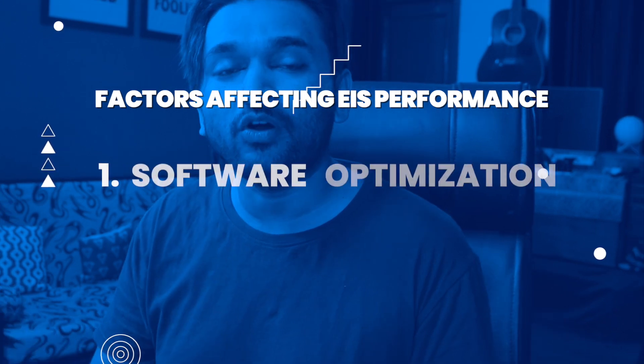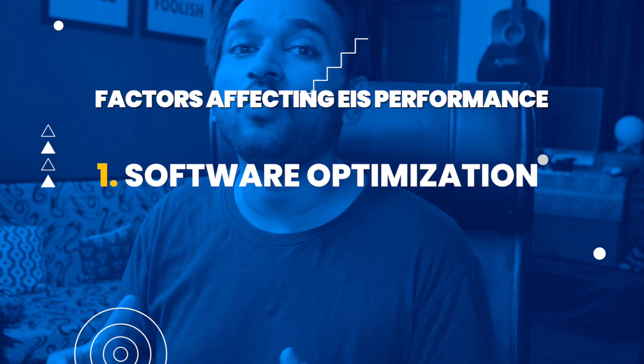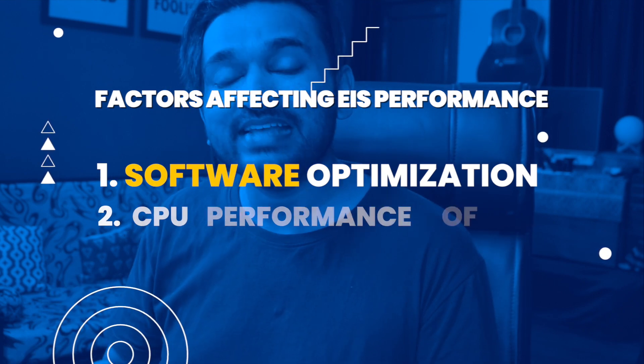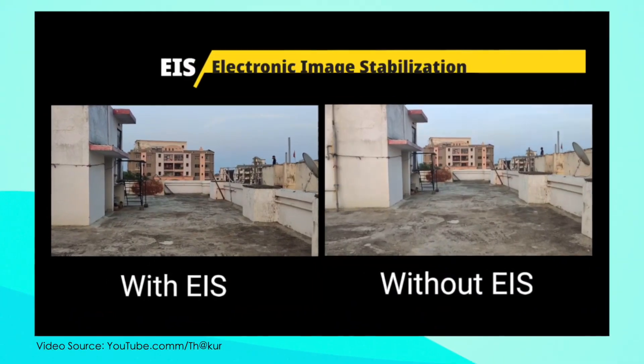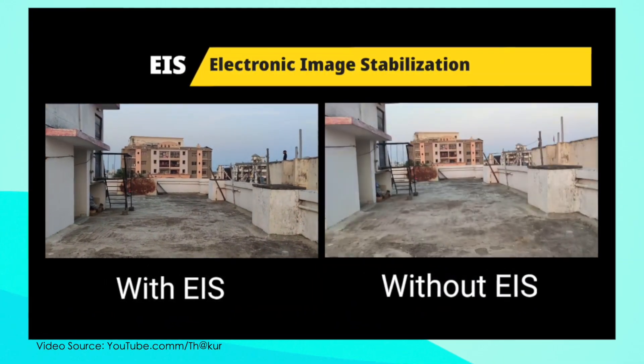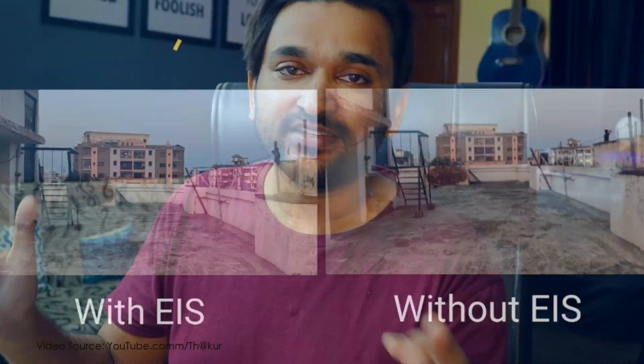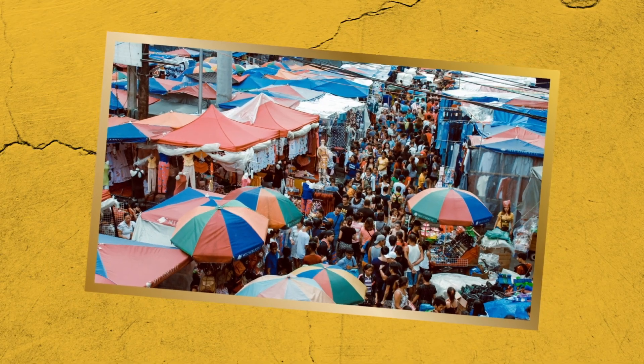The performance of EIS is not the same on all smartphones — it depends on how optimized the software is, as well as how powerful the processor is. What EIS does is analyze all 30 frames of a one-second video and look for pixels that remain at the same point. In a handheld video there will be shakes, meaning the edges of frames will differ across those 30 frames.